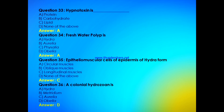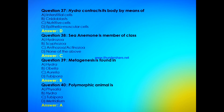A colonial hydrozoan is — Hydra, Metridium, Aurelia, or Obelia? The answer is D, Obelia — a colonial hydrozoan is Obelia. Next: Hydra contracts its body by means of — interstitial cells, cnidoblasts, nutritive cells, or epithelio-muscular cells? The answer is D, epithelio-muscular cells.